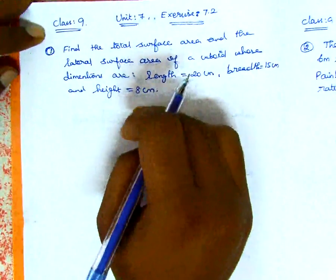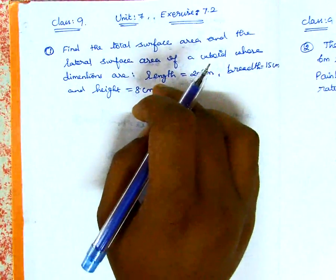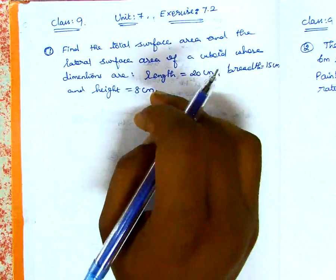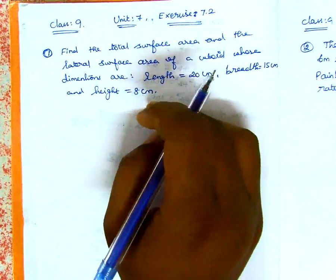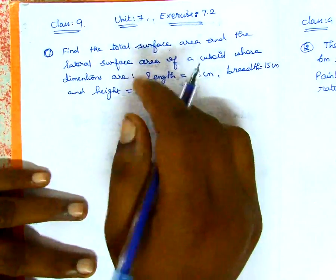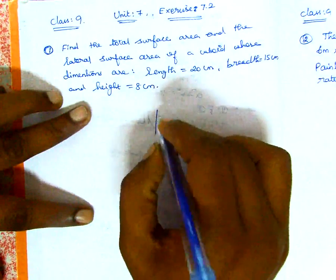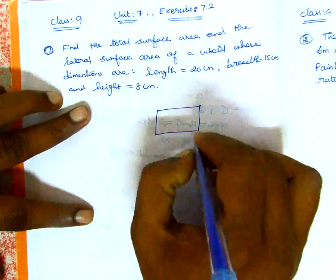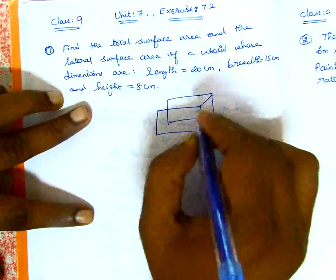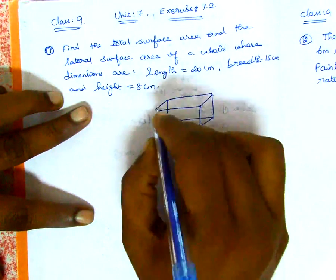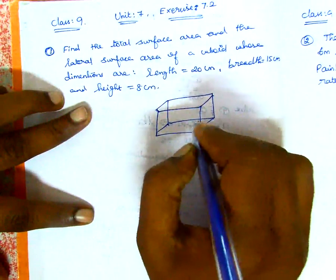In Exercise 7.1, we found the triangle area using Heron's formula and then quadrilateral area. In Exercise 7.2, we will find the cube and cuboid TSA and CSA — that is, total surface area and lateral surface area. This is the cube and cuboid.